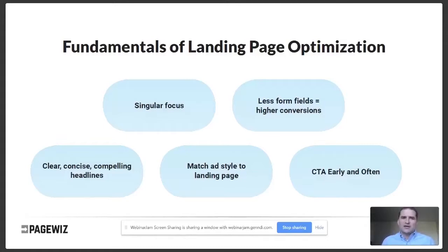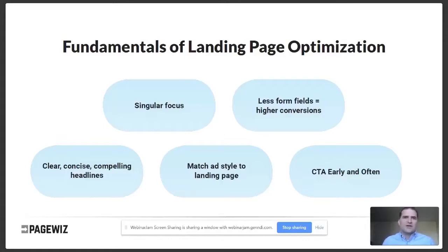Third, use clear, concise, and compelling headlines — it's the first thing people see, along with the image, so test those carefully. Fourth, match your landing page and ad together: the styles and messaging should be congruent. This also helps with quality score in AdWords, as a good quality score is tied to how congruent those styles are.